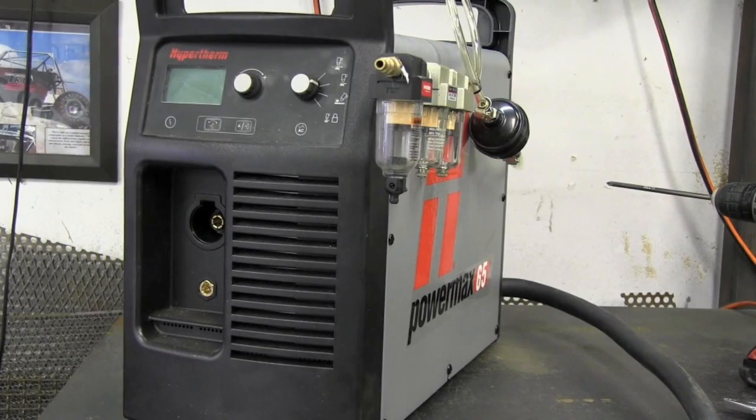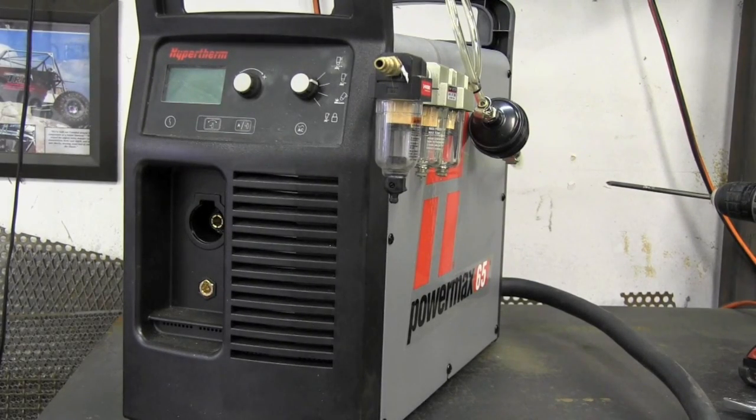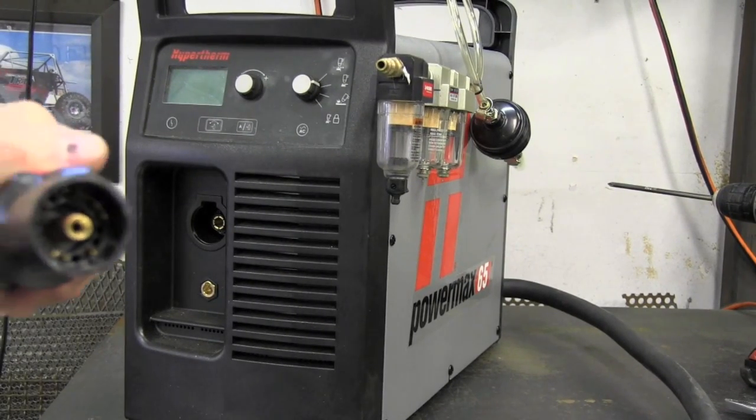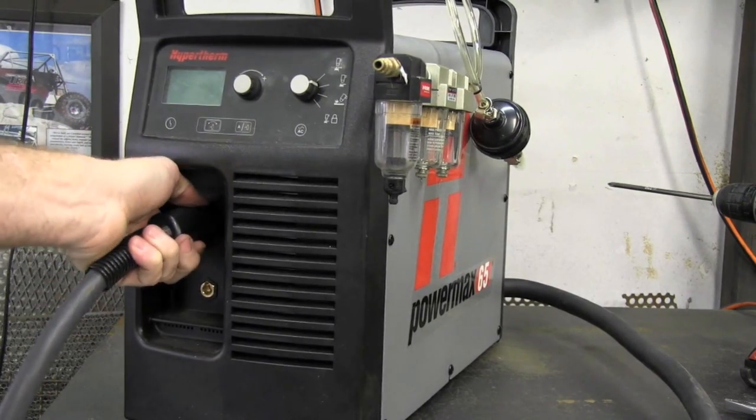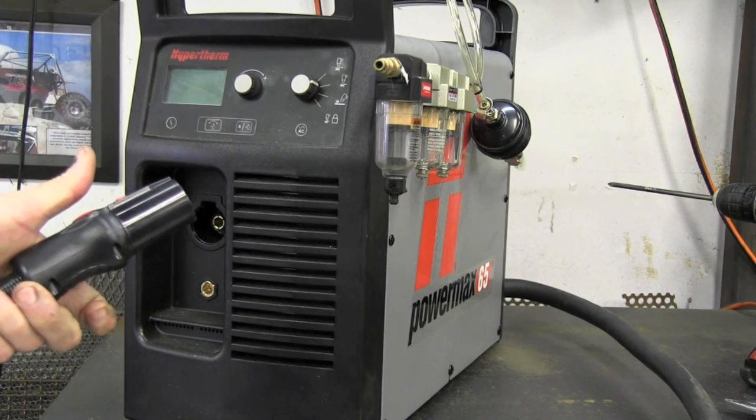Onto the front of the machine, hooking up the torch is a snap. It just has this quick connect fitting and it just pushes in place and then to remove you push down on the button and pull it out. It's really a nice operation.